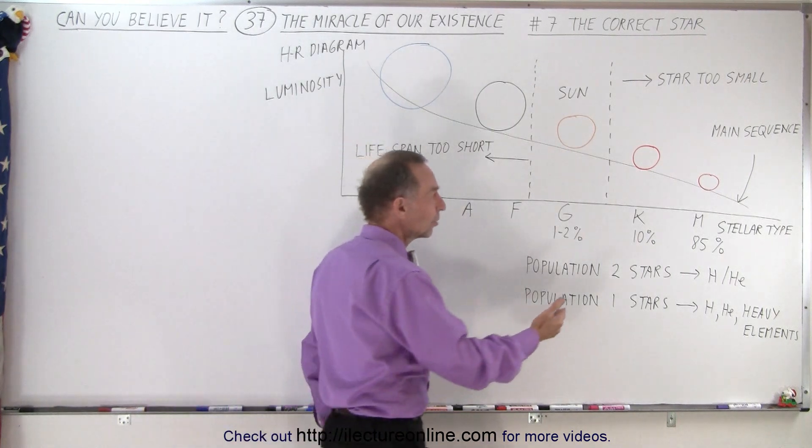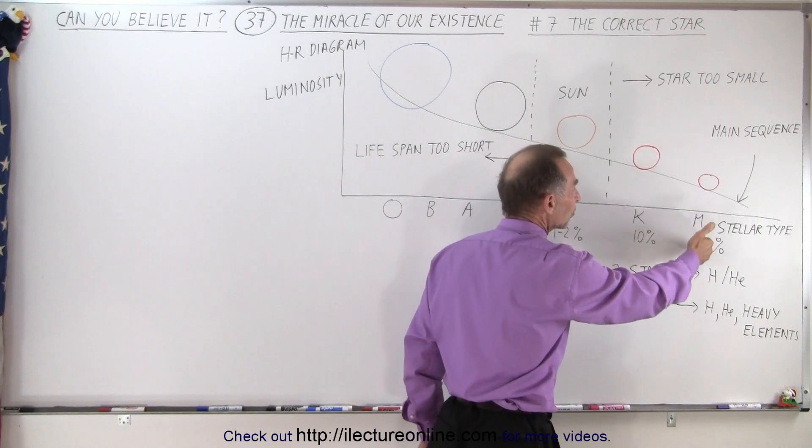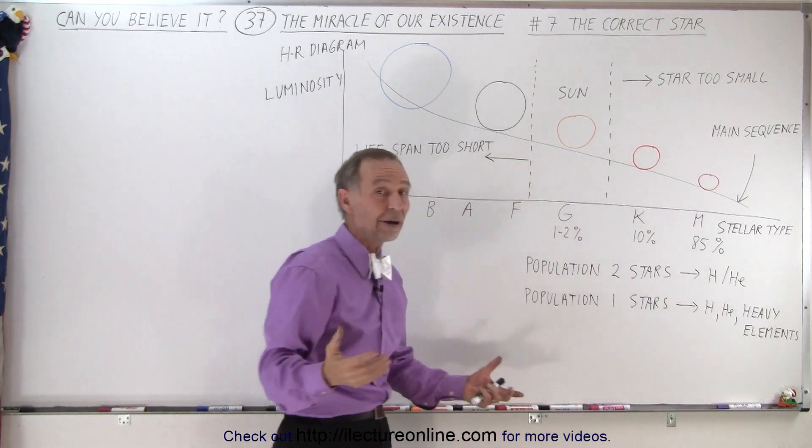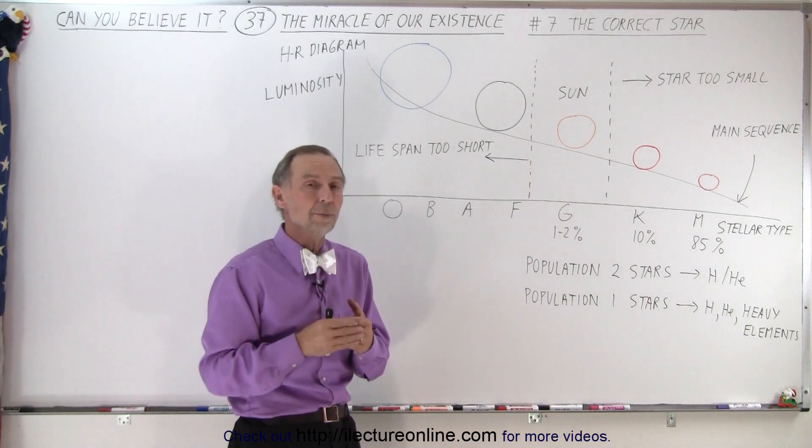On the other side, the most common star, the M-type stars, which are 85% of all the stars, they're simply too small. Why would that be a problem?